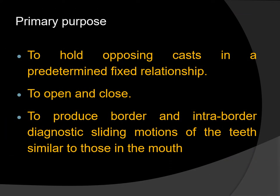The next purpose of an articulator is to hold the maxillary and mandibular cast in a predetermined fixed relationship — that is, predetermined vertical height and centric relation. The next purpose is to simulate jaw movements like opening and closing, and also to produce border movements — that is, extreme lateral and protrusive movements — and intra-border movements within the border movements of the teeth, similar to those in the mouth. So the three primary purposes are: to hold the cast, to open and close, and to produce border and intra-border diagnostic sliding motions.